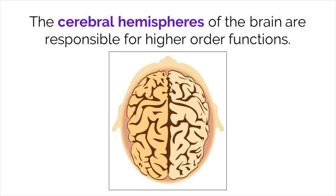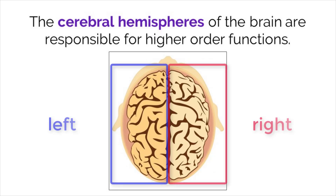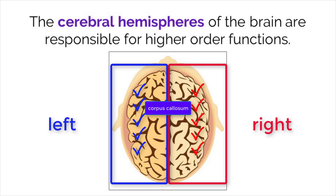The cerebral hemispheres are responsible for higher-order functions in the brain. Because these hemispheres are split into two — right and left — each hemisphere is responsible for different roles. The right hemisphere of the brain processes creativity, spatial ability, and recognition of faces, places, and objects. The left hemisphere is responsible for speech and language comprehension, analysis and calculations, time and sequencing, and recognition of letters and numbers. Information can be passed between these two hemispheres through a structure called the corpus callosum.